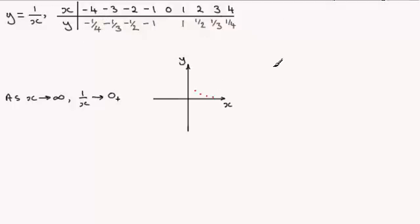And if we were to plot these points, when x is minus 1, y is minus 1. When x is minus 2, you get minus a half. x is minus 3, you get minus a third. When x is minus 4, you get minus a quarter.